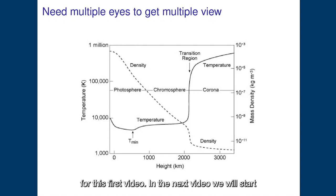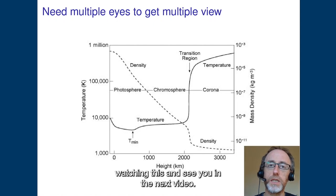So that's it for this first video. In the next video, we will start talking about the different layers of the solar atmosphere in more detail, presenting some of their key observational aspects and key properties. So thanks for watching this and see you in the next video.